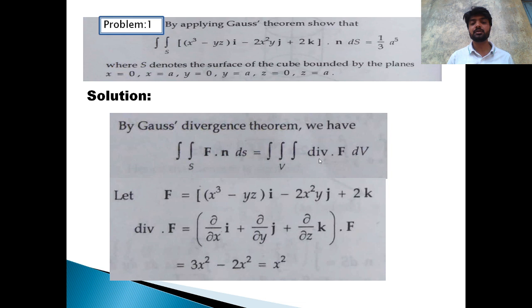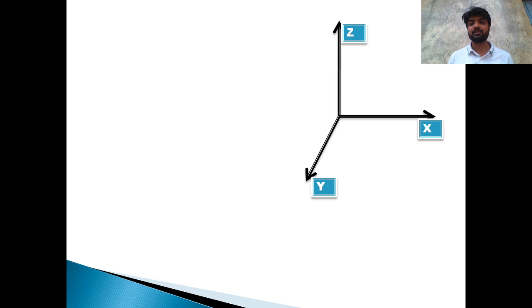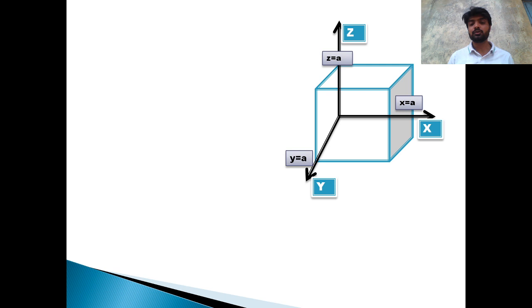So we have to integrate the value of the divergence. We create the 3-dimensional figure: for the cube, x equals a, y equals a, and z equals a, with the origin at the corner. So x varies from 0 to a, y varies from 0 to a, and z varies from 0 to a.